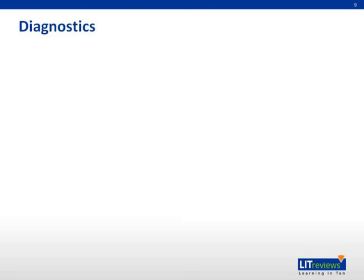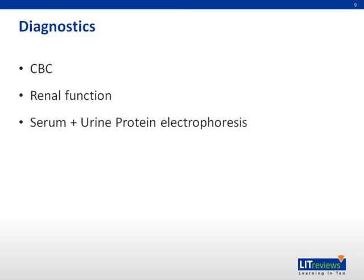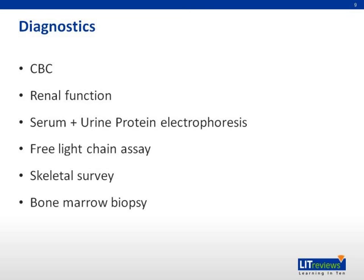The diagnostic workup should include a complete blood count, renal function, serum and urine protein electrophoresis, free light chain assay if available, skeletal survey, and bone marrow biopsy. In selected cases, MRI of the spine, a cardiac echo, or a renal biopsy may be required.